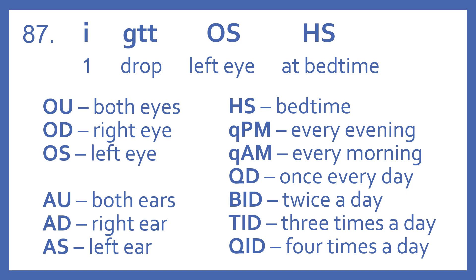QAM is every morning. QD means once every day. BID means twice a day. TID means three times a day. And QID means four times a day.